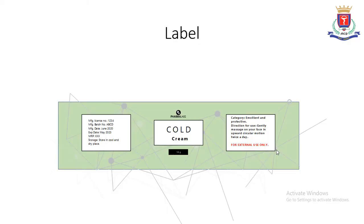Now here is the label which I have prepared for cold cream. Since cold cream is a cosmetic formulation, it is not necessary to mention the composition of the formulation. No API is present, so here we have just written the name cold cream. You can give the name according to your choice. The quantity is mentioned, then you have to mention the category of the formulation, whether it is emollient, protective, or moisture retaining. Directions for use state: gently massage on your face in an upward circular motion twice a day. 'For external use' is important.